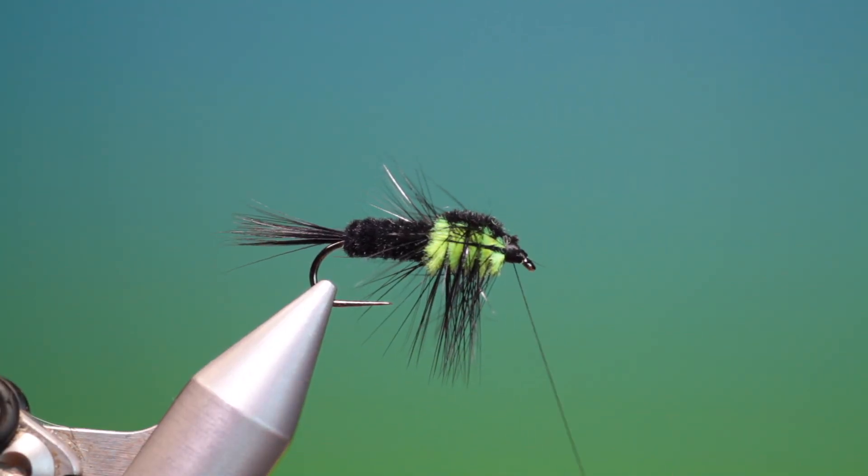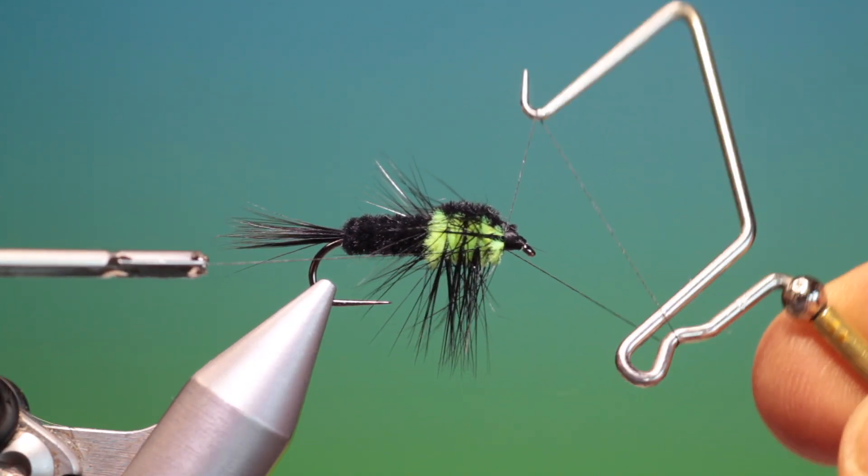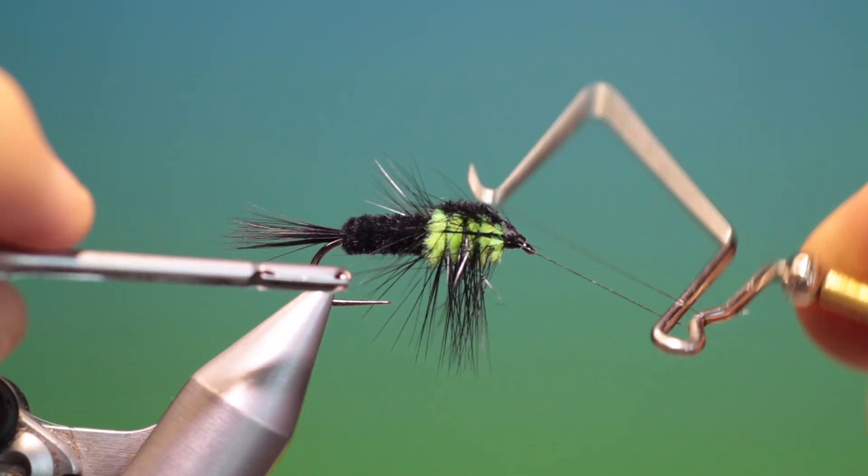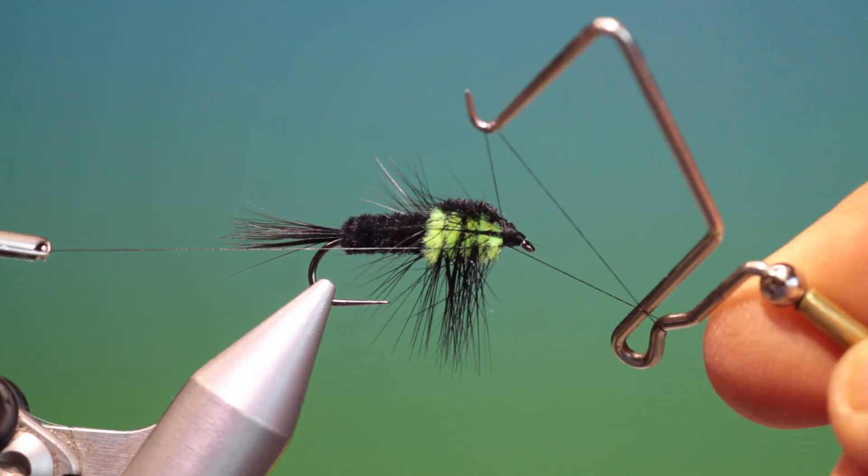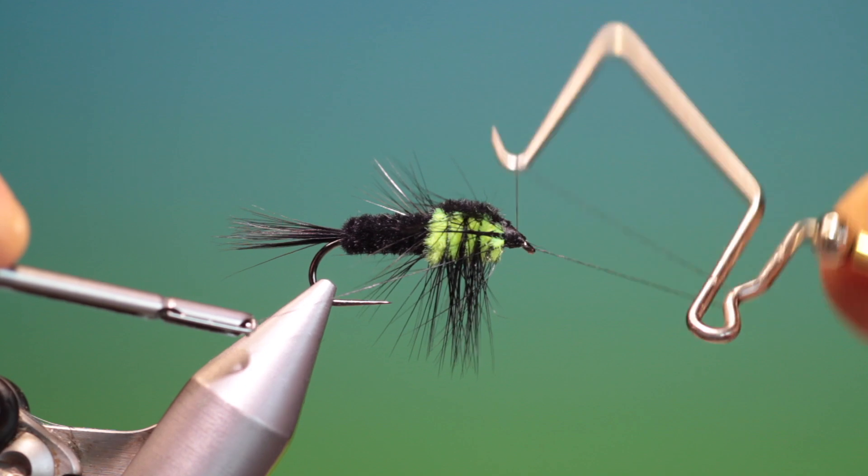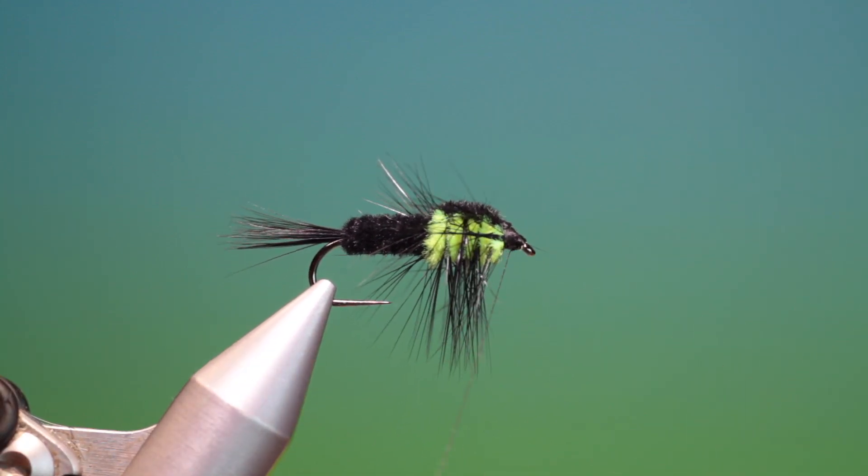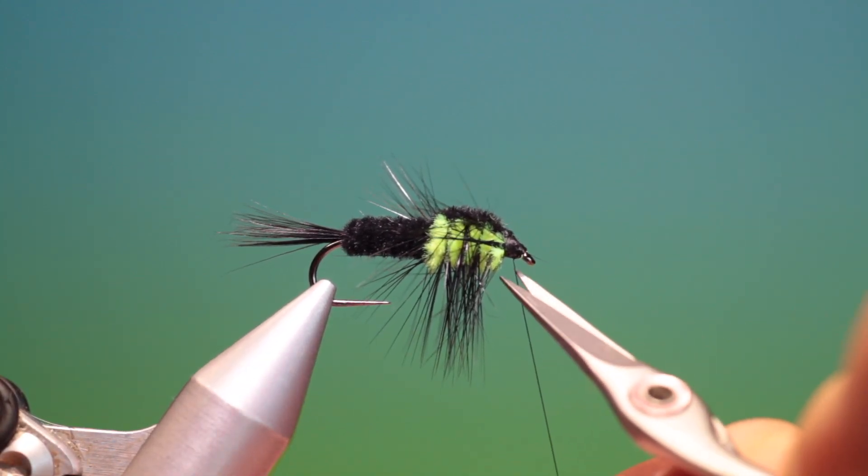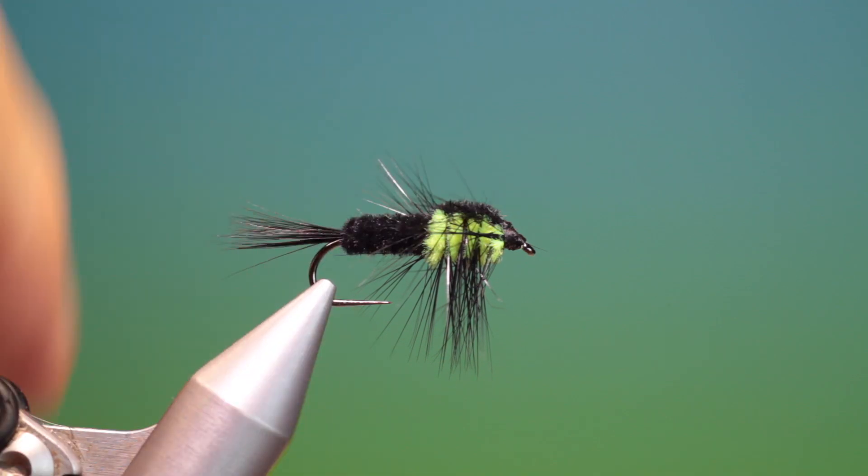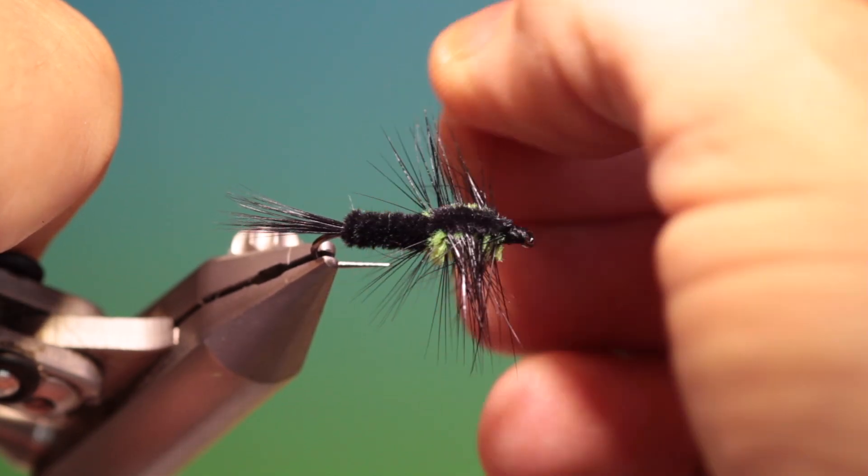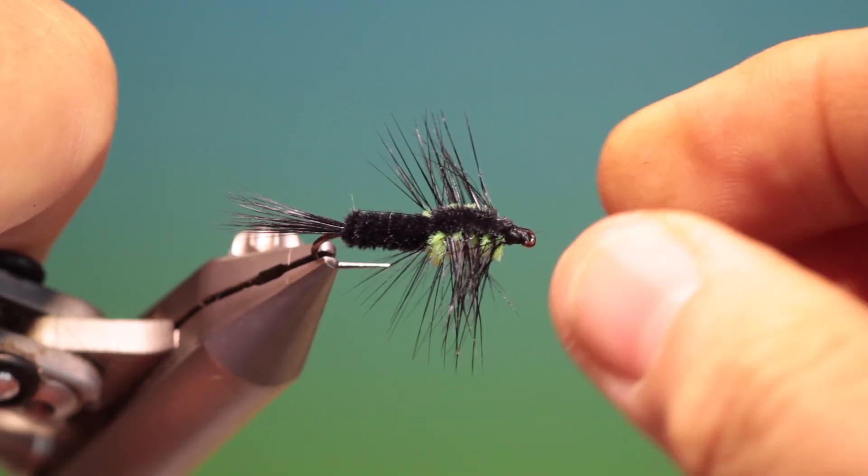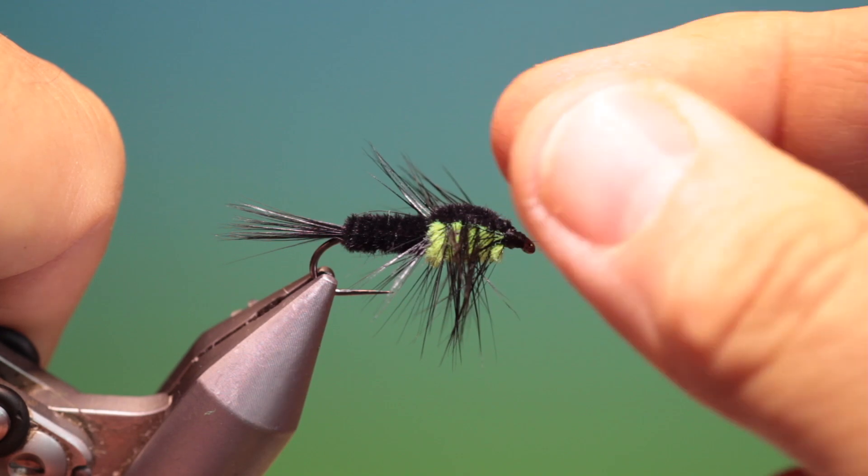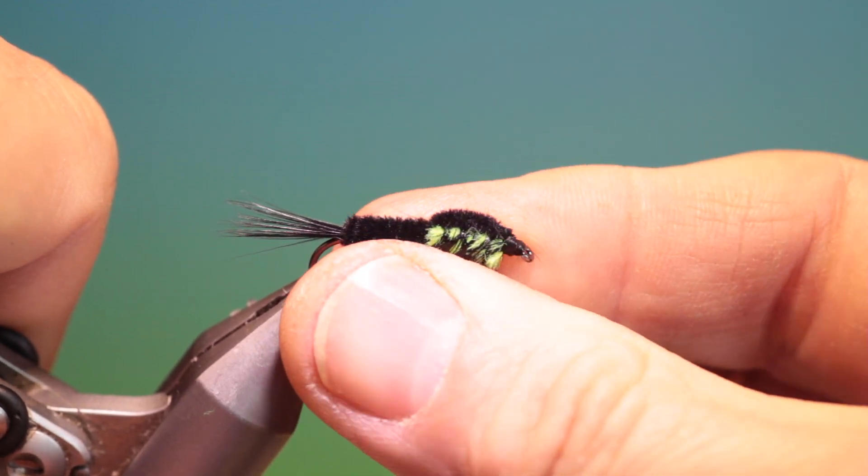Whip finisher. That's a great nymph. It'll catch fish anywhere. Whip finish, remove our tying thread. Now we can just wet our fingers and position the legs. Want them pointing slightly back and down.